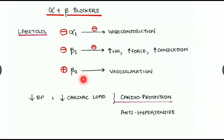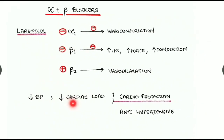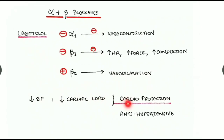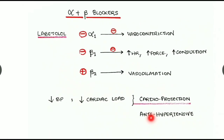By its beta-2 agonist action, labetalol causes vasodilatation, further reducing blood pressure. Combined reduced blood pressure and reduced cardiac workload result in cardioprotective activity, and hence labetalol can be used for cardiac protection as an antihypertensive.